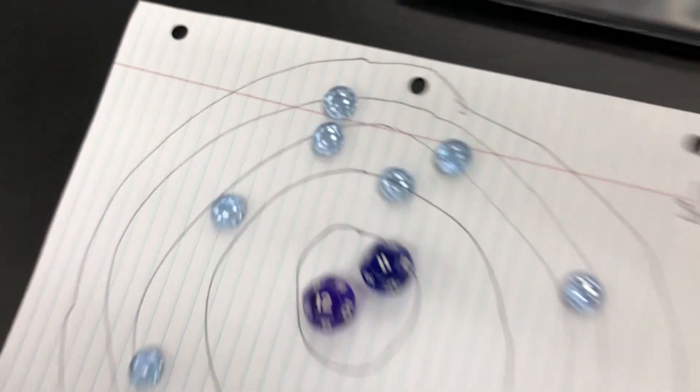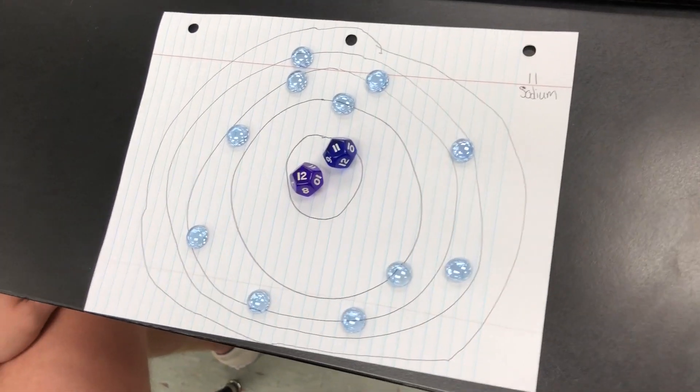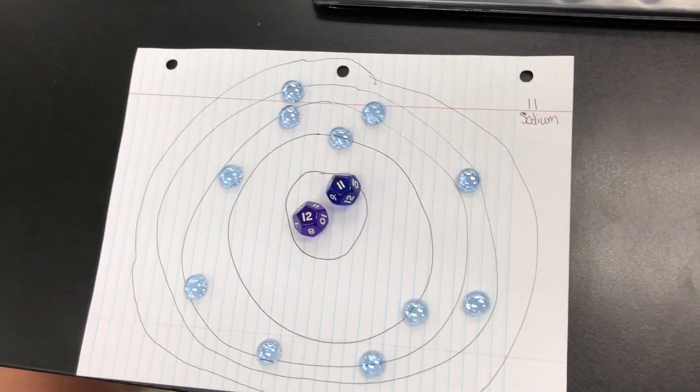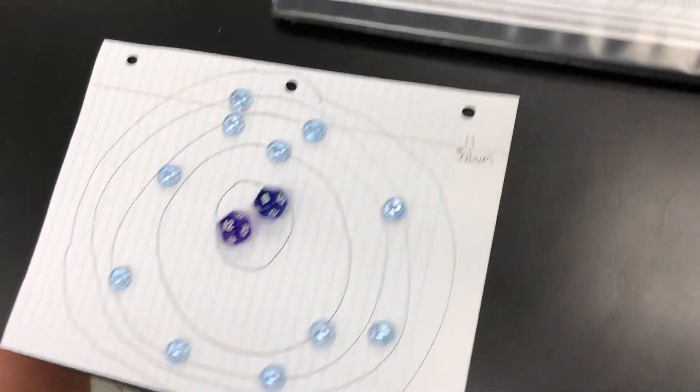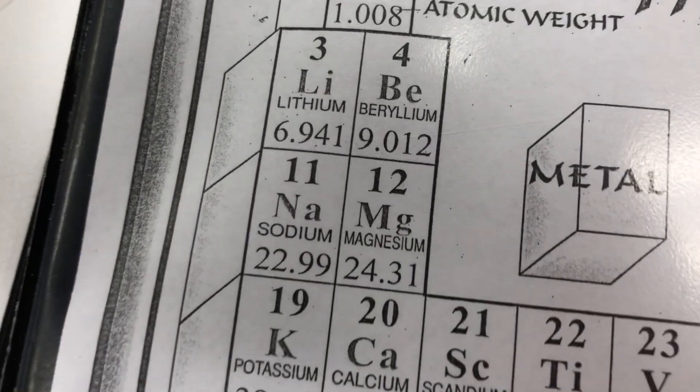Nice. And that gives you how many electrons total again right there? That gives you 11 for sodium. Okay, so now on the periodic table we got sodium up here.